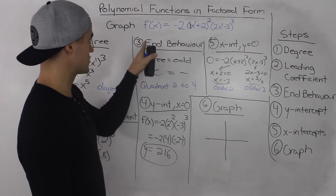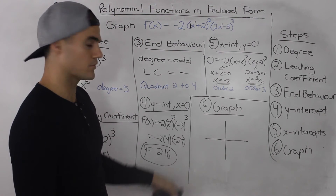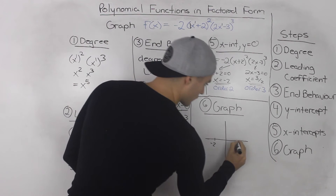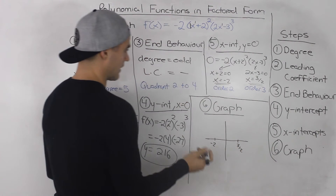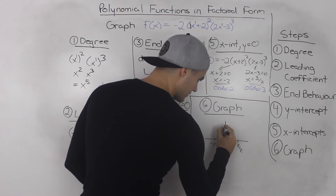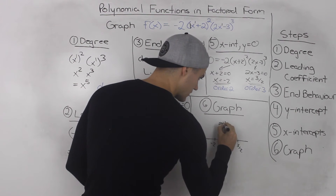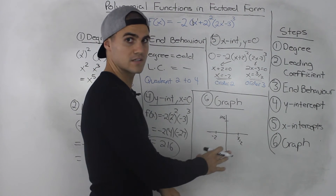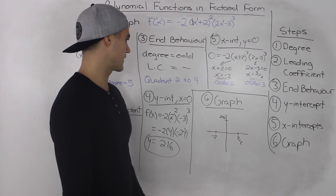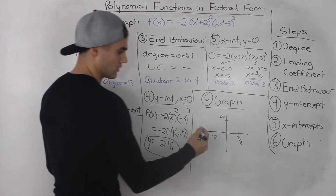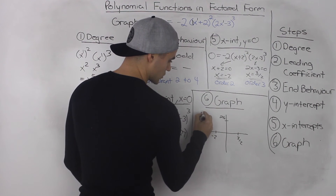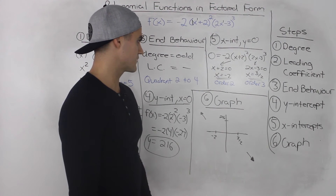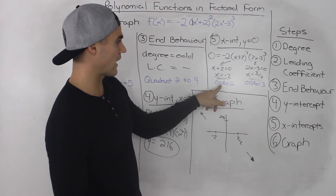Now to graph it, let's use the results from steps 3, 4, and 5. Let's label the x-intercepts first from left to right: negative 2 would be here, and then 3 over 2, which is the same as 1.5, would be over here. Let's label the y-intercept of 216 up here. Note that this graph is not to scale — if it were, the 216 would be a lot higher, but I sized the graph to fit. Before graphing, let's label the end behaviors. Reading from left to right, this polynomial function starts at quadrant 2 and ends in quadrant 4.